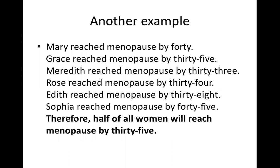This is another example. Mary reached menopause by 40, Grace reached menopause by 35, Meredith reached menopause by 33, and so on. Therefore, half of all women will reach menopause by 35. The premises are six — three of them say three women reached menopause by 35, the other three say three other women reached menopause after 35. So the conclusion says half of all women will reach menopause by 35. So verifiable statements are the premises; the confirmable statement is the conclusion.